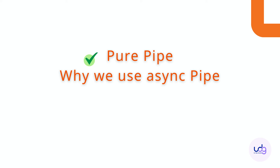So which one is better to use? It's about preference, but for optimization purposes, pure pipes are better to use. They don't trigger callbacks as frequently and don't reload as much as impure pipes.